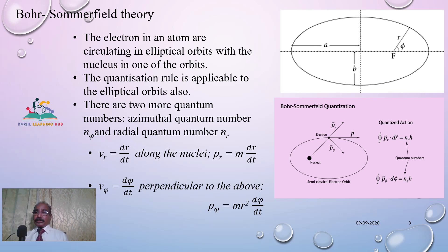And he introduced two new quantum numbers: one is azimuthal quantum number n_φ, another one is radial quantum number n_r.